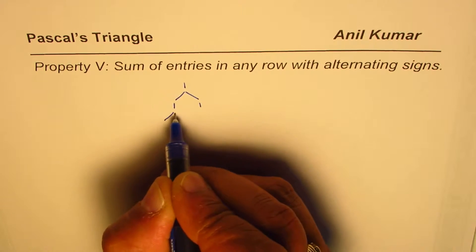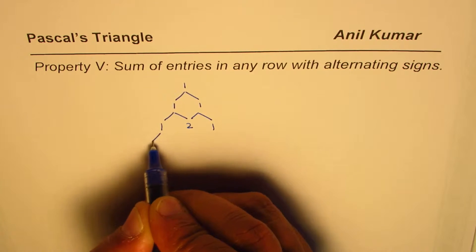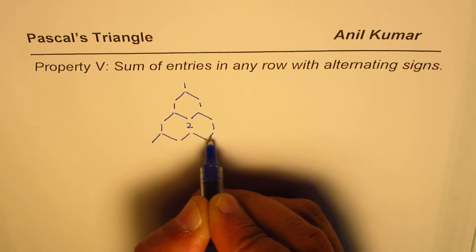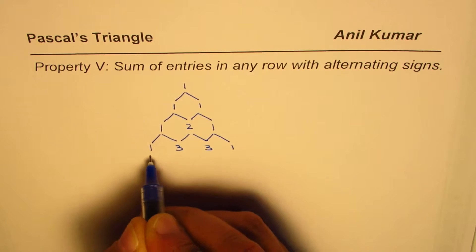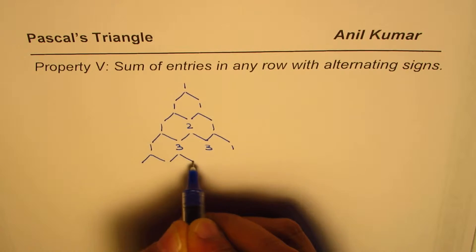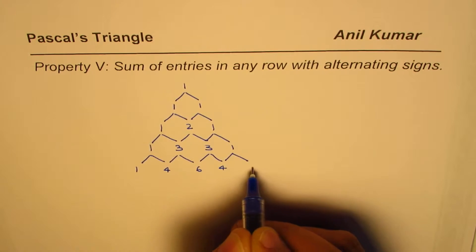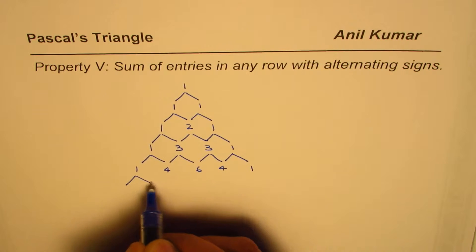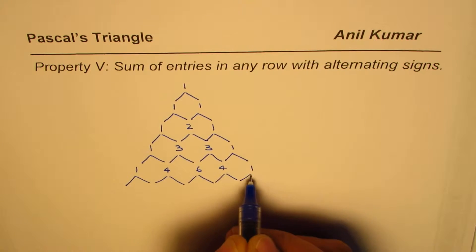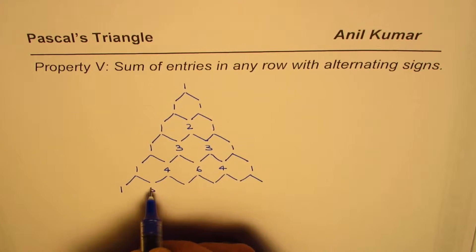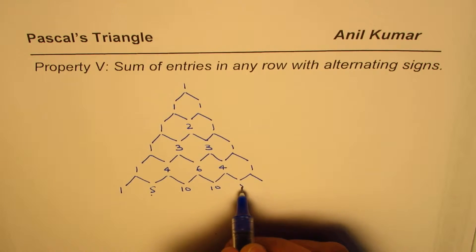Pascal's triangle is written like this — you add the previous two entries to get the next one. So we get one, three, three, one; then one, four, six, four, one; and continuing, the fifth row gives us one, five, ten, ten, five, one.